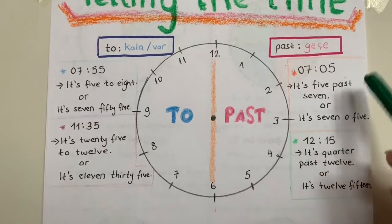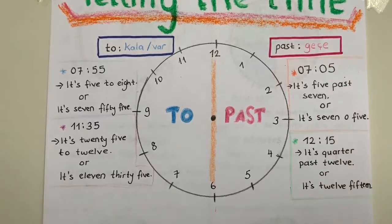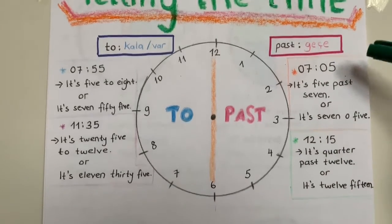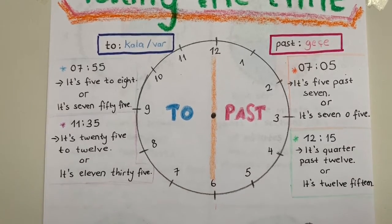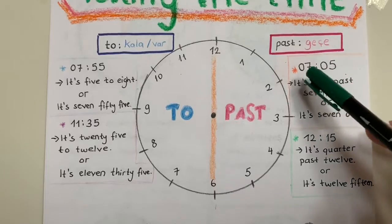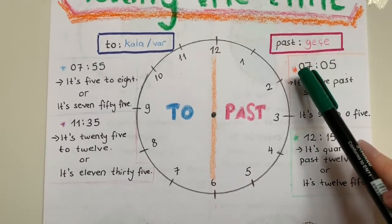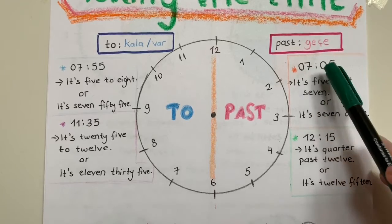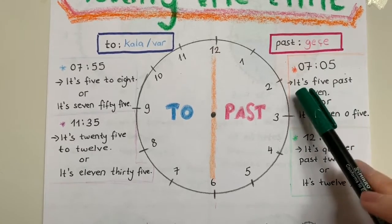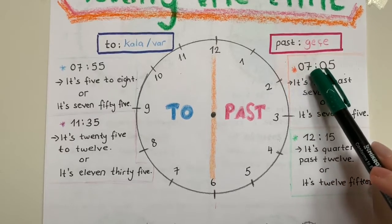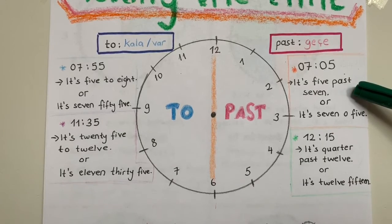say it is seven oh five. Ben bu şekilde gördüğüm zaman, istersen bunu analog saate çevirerek daha kolay yapıyorsam, o şekilde de söyleyebilirim. Çünkü ne olacak? Benim akrebim saat yediye bakıyor olacak, yelkovanım da saat beşe bakıyor olacak. Artık yediye beş geçiyor diyeceğim.